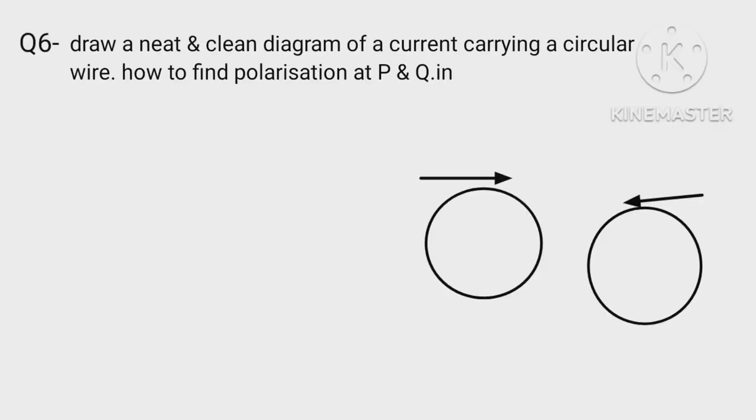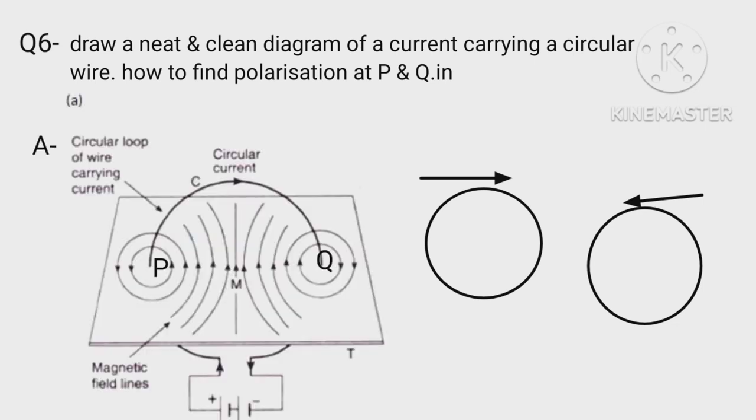Draw a neat and clean diagram of a current carrying circular wire. How to find polarization at P and Q? Since magnetic field is clockwise and anticlockwise, therefore polarization at P and Q are S and N pole.